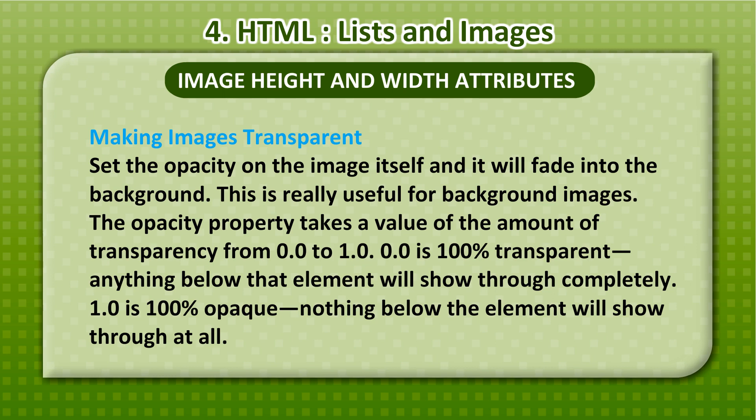0.0 is 100% transparent — anything below that element will show through completely. 1.0 is 100% opaque, meaning nothing below the element will show through at all.